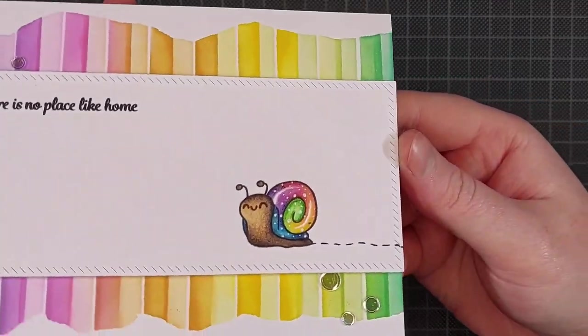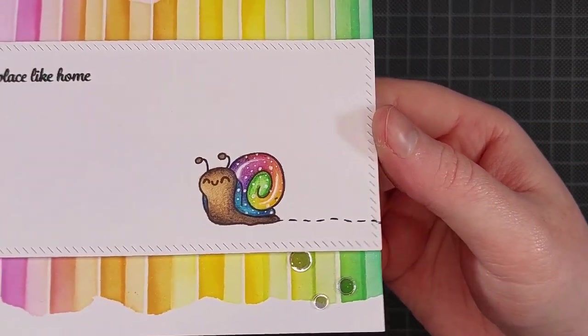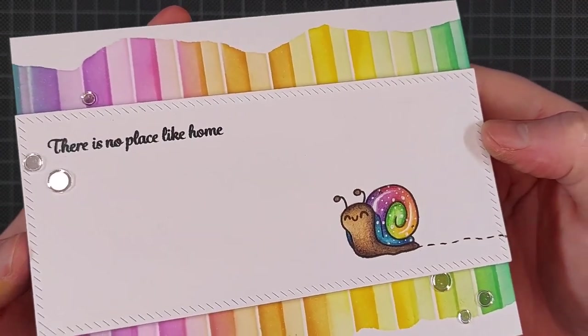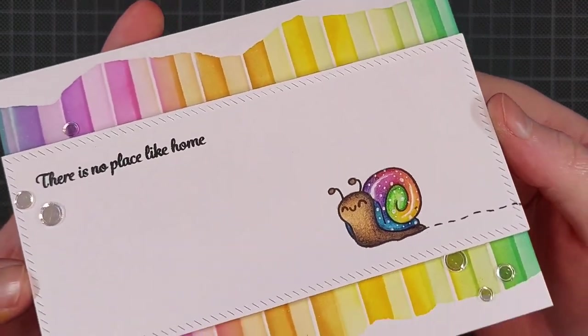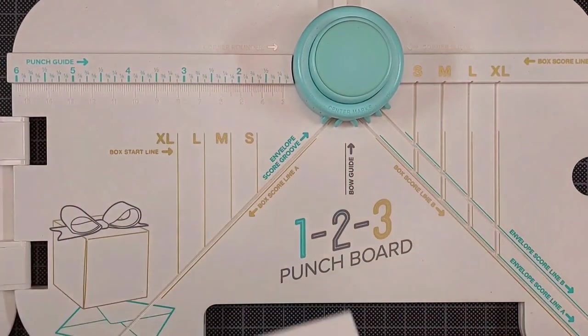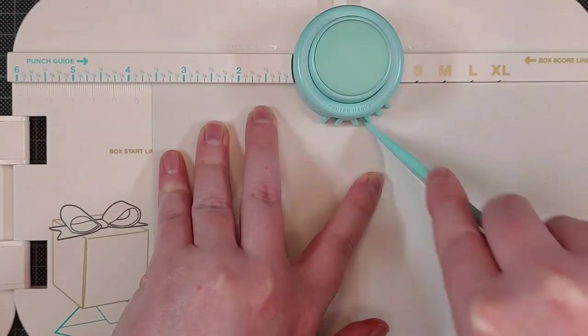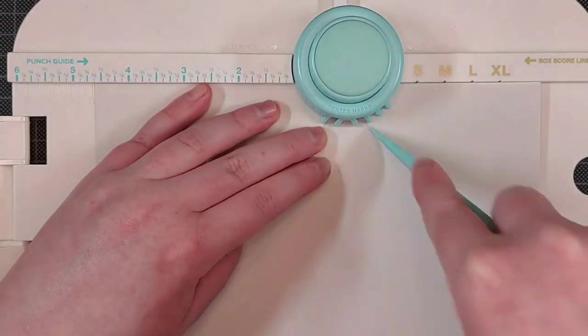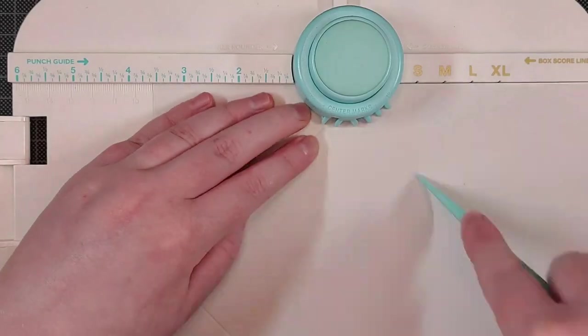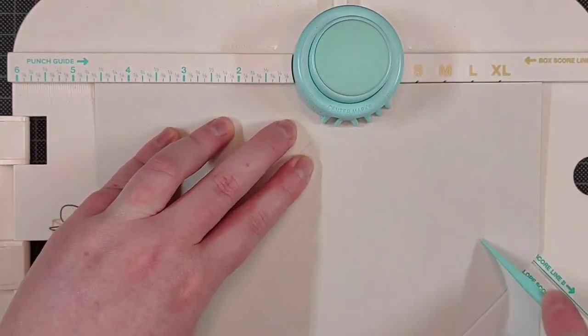And that's the finished card. Again, I'm going to be making a matching envelope, which just steps up your mail a little bit. I'm using the We Are Memory Keepers 123 Punch Board and just following the instructions on that to make an A2 sized envelope out of grey cardstock.